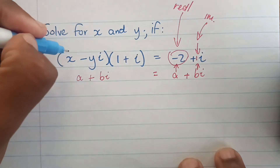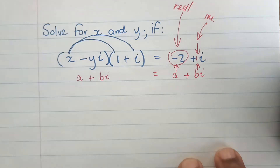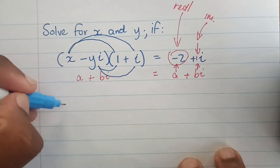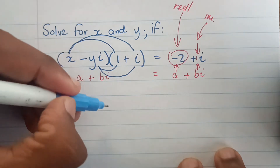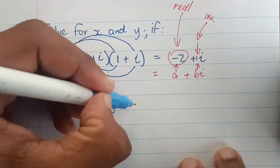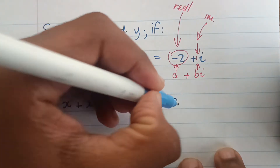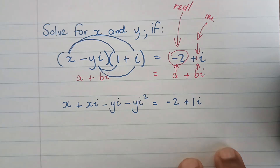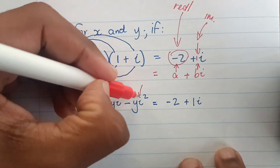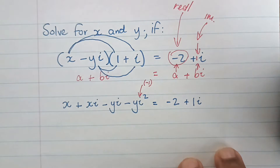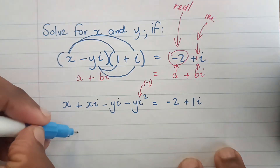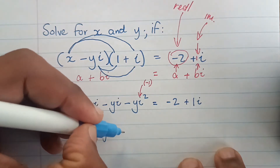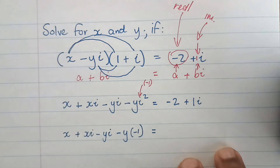We're going to multiply everything out on the left-hand side. x multiplies with the 1, x multiplies with i, yi multiplies with 1, and yi multiplies with i — giving negative yi squared. So on the left-hand side we have x plus xi minus yi minus yi squared. The right-hand side stays the same. Now, i squared changes to minus one, so substituting that in we rewrite the expression.